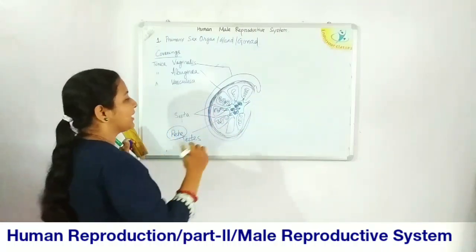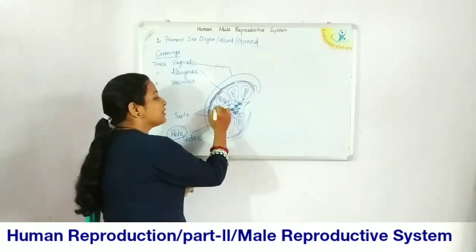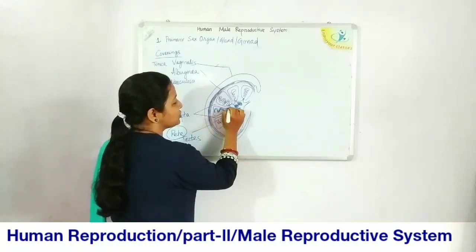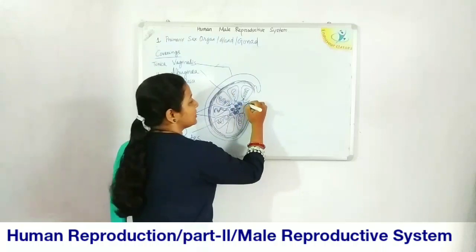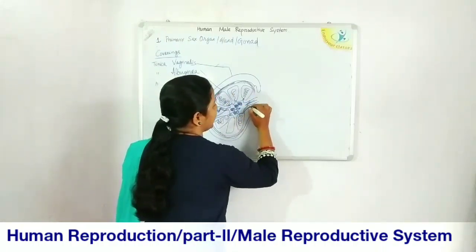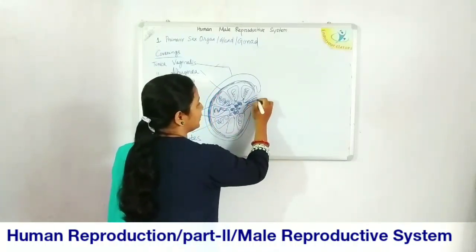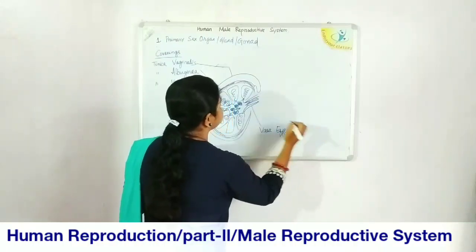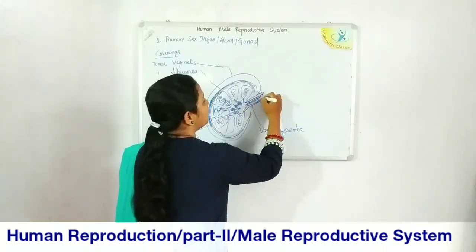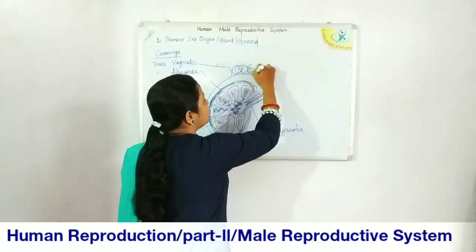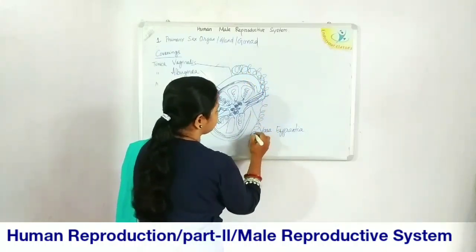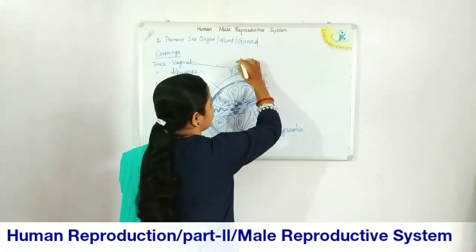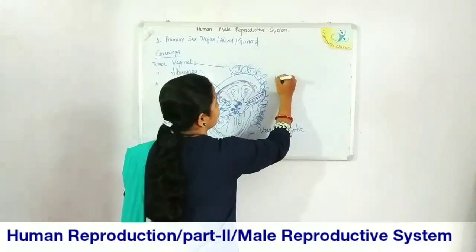Sperm is synthesized inside the seminiferous tubules and moves from the seminiferous tubules to the rete testis, then through a network of straight tubules called the vasa efferentia. The vasa efferentia then converge to form a supercoiled tube partially encircling the testes, called the epididymis.